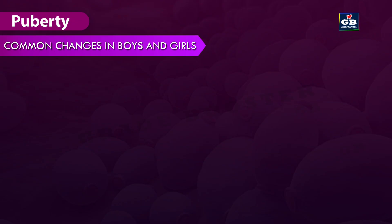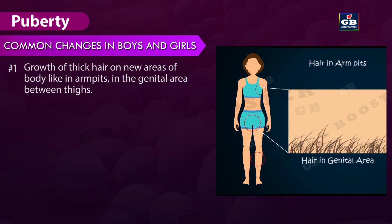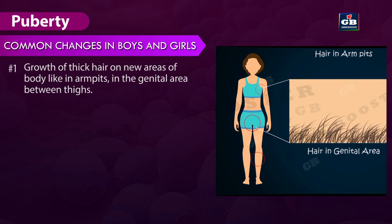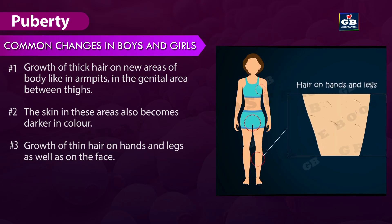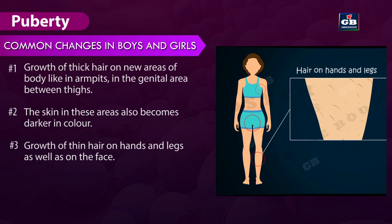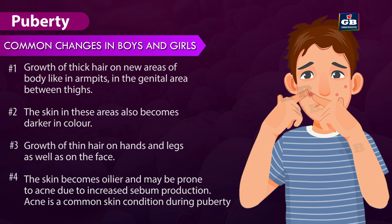Changes that are common in both boys and girls: 1. Growth of thick hair on new areas of body parts like armpits and genital areas between thighs. 2. The skin in these areas becomes darker in color. 3. Growth of thin hair on hands, legs, and face. 4. The skin becomes oilier and may be prone to acne due to increased sebum production. Acne is the common skin condition during puberty.